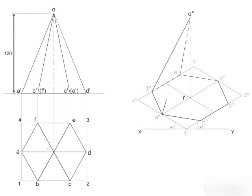Let's join the apex O double dash with vertices of the base. Now take a look at the complete isometric view of the pyramid. Observe the invisible edges are shown as dashed lines.